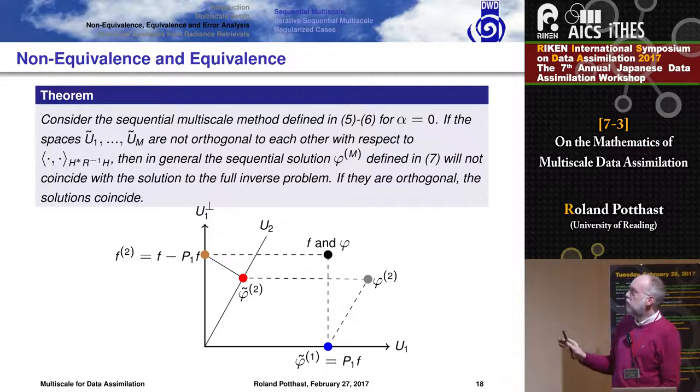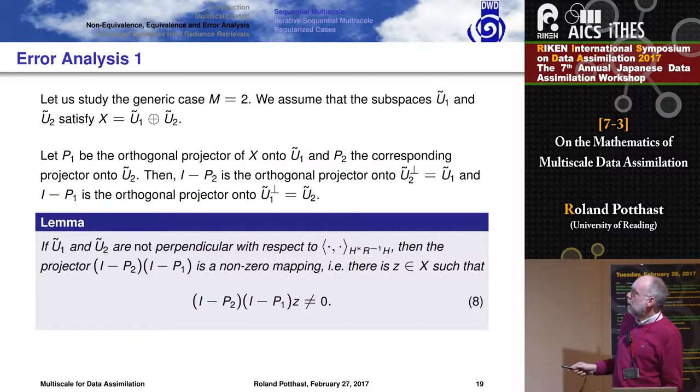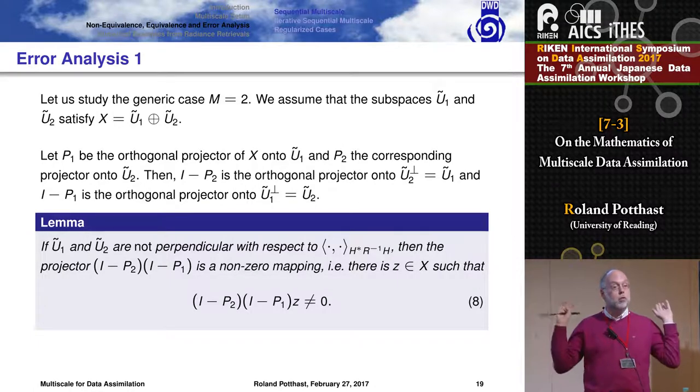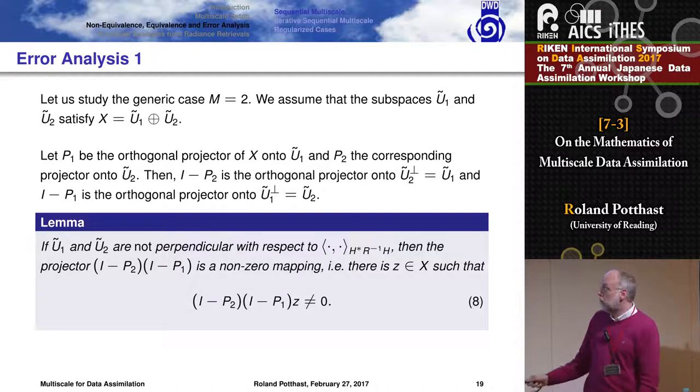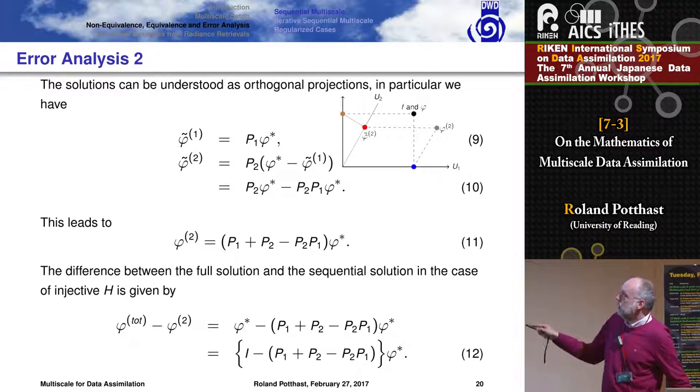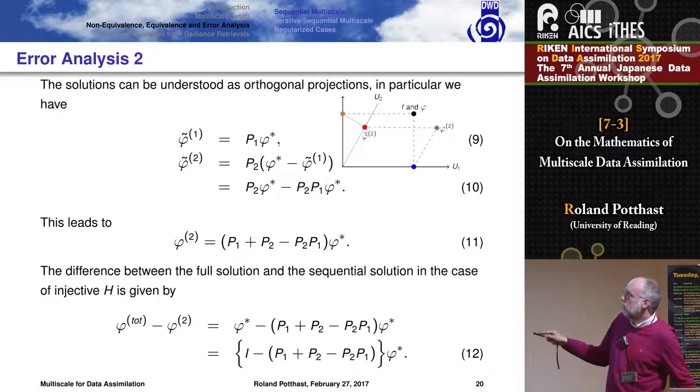If you notice the error analysis for this, basically I said it's a projection operator P1 and a projection operator P2, orthogonal projections, and basically the error will boil down to this product here in 2D with two spaces. It's usually nonzero. So if you do successive first a month scale then the other scale, it's not the same what you get as if you would do the full problem in one go. This is the error and the error can be calculated. I did this here. In principle, you do one step of projection, you do another step of the iterated projection, you get this term here.